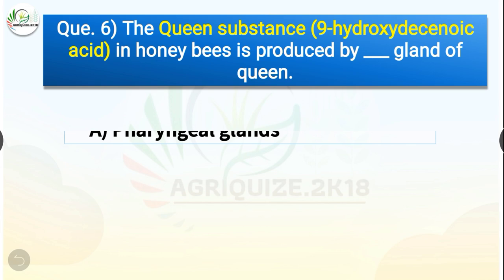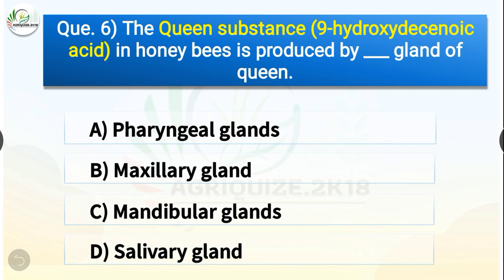Question number six: The queen substance in honey bees is produced by dash gland of queen. The options are pharyngeal glands, maxillary gland, mandibular glands, or salivary gland. The correct answer is option C — mandibular glands. So the queen substance in honey bees is produced by mandibular glands of the queen.